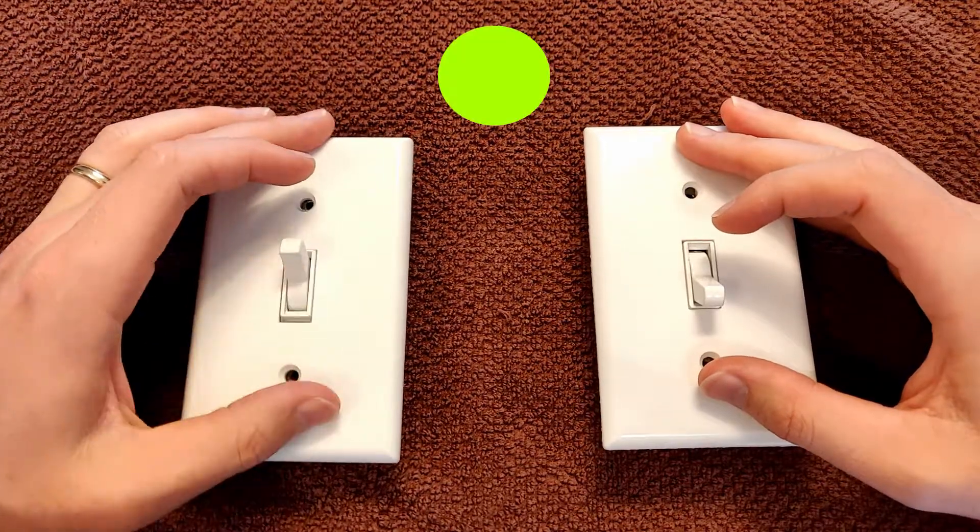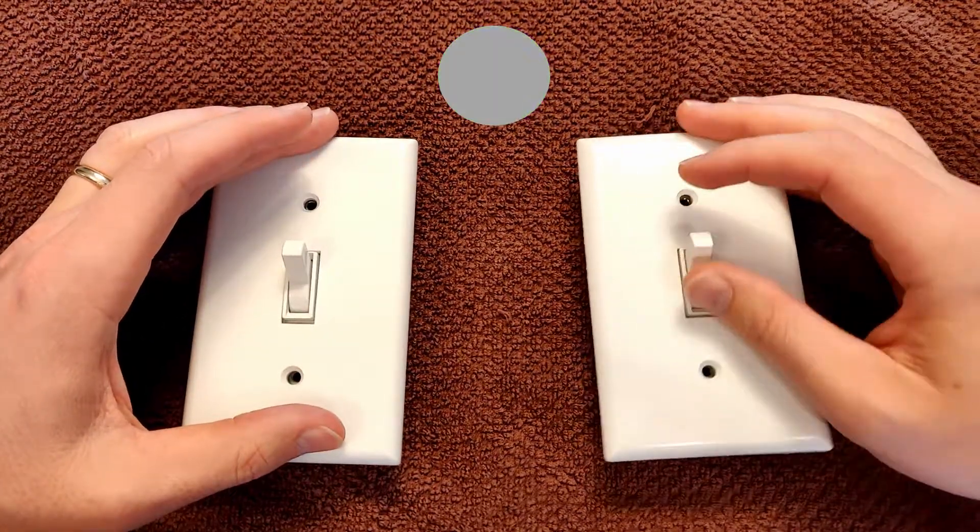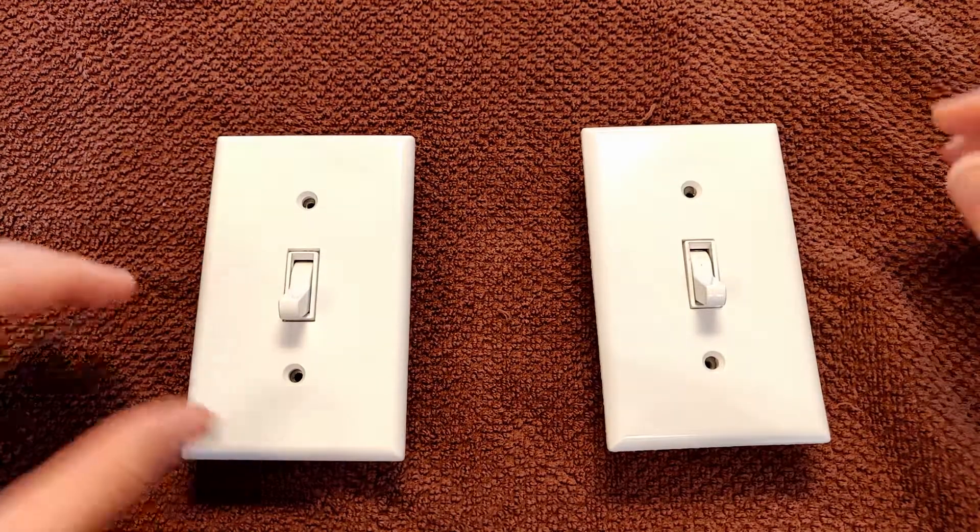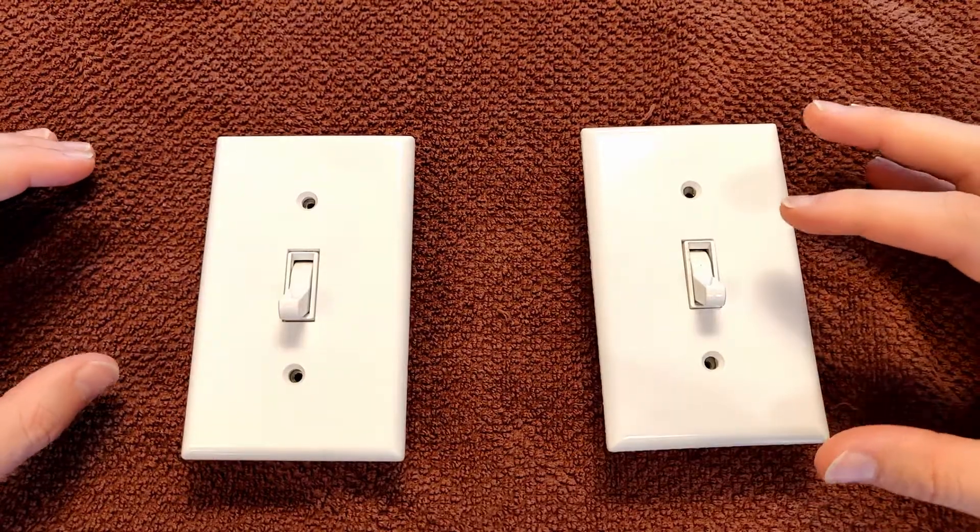If you have two switches at different locations that turn the same light on and off, these are both three-way switches. A typical example would be at the top and bottom of a staircase.